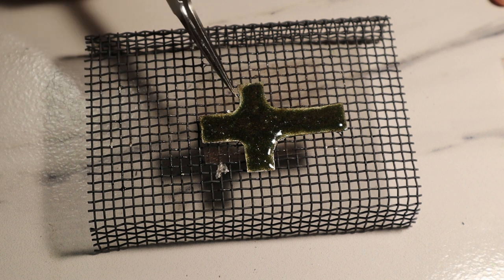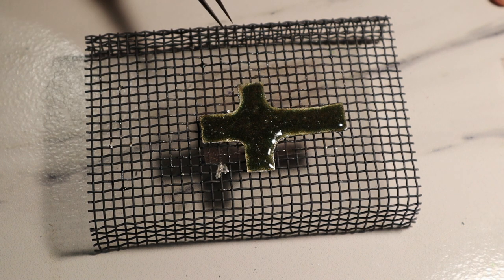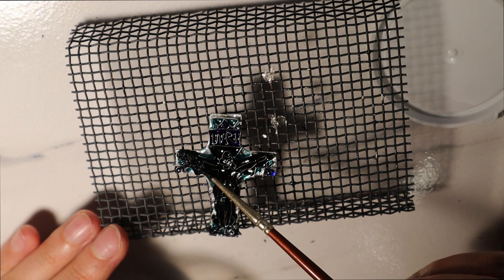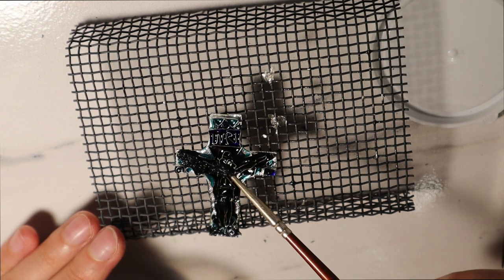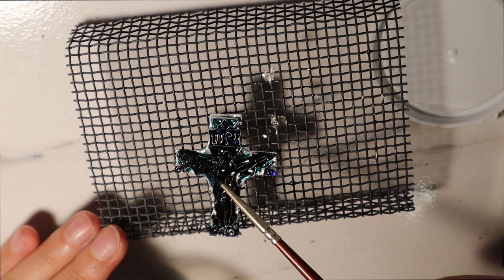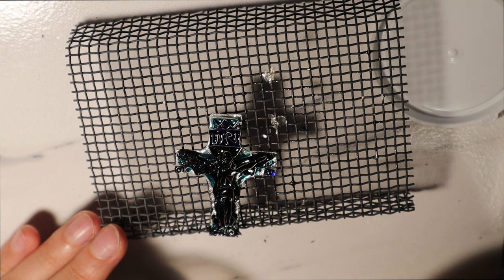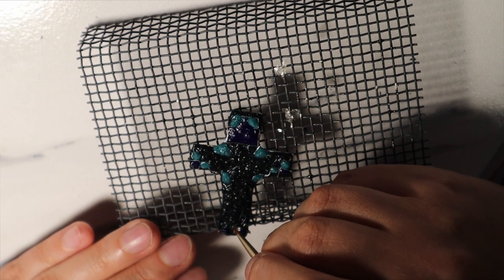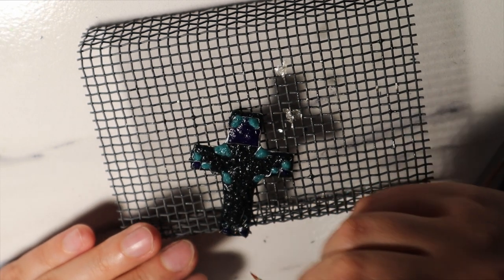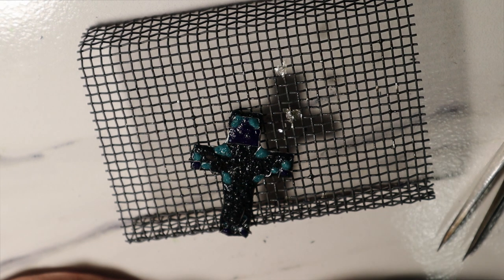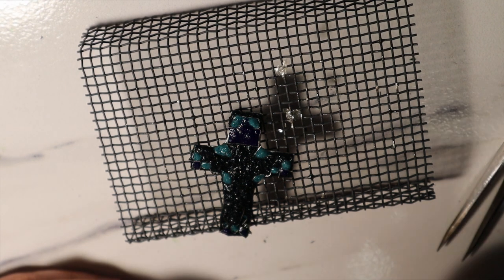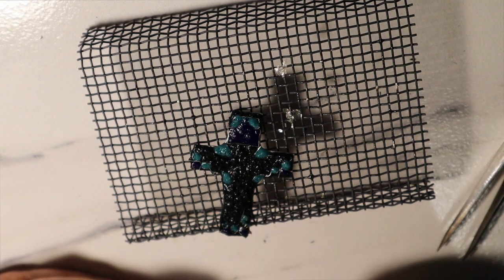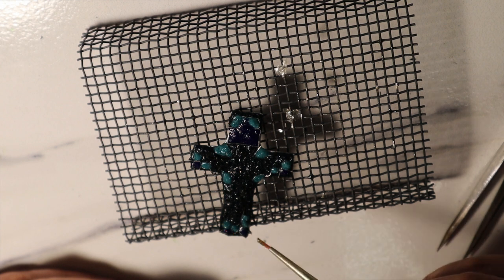As you know, cloisonné enamel jewelry lasts for centuries, not one or five, but many, many centuries. And if it's not technologically processed correctly, it will crumble, it will crack, and disappear in a few years. Because it's getting some cracks if it's not technologically processed correctly. Okay?